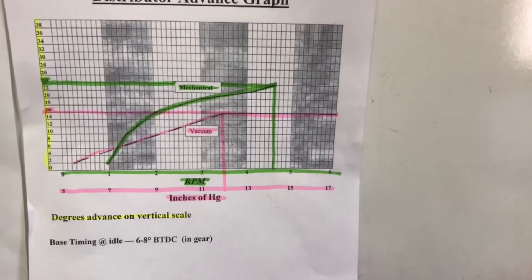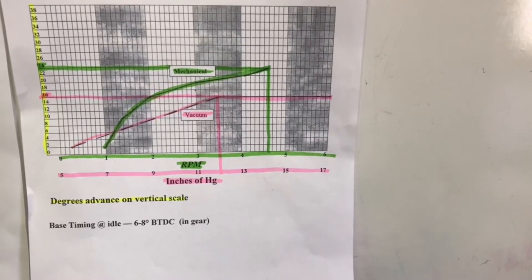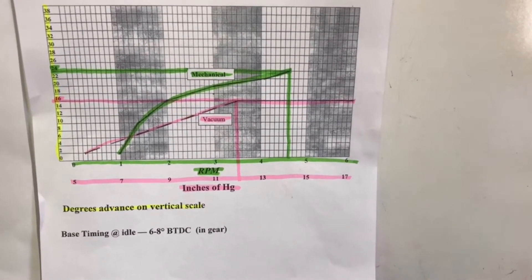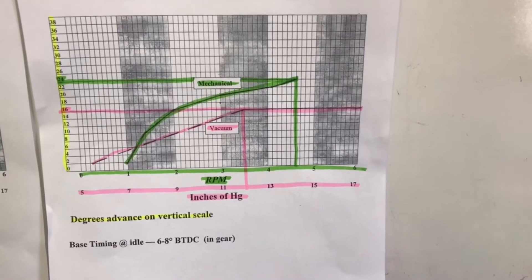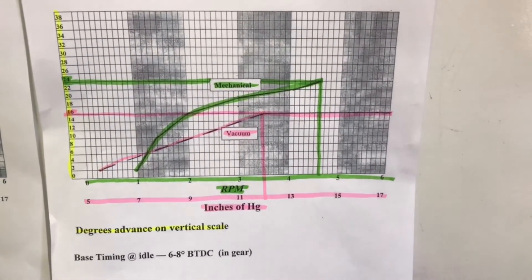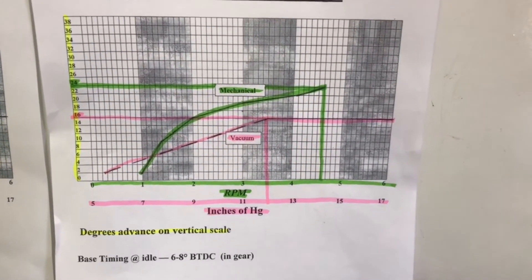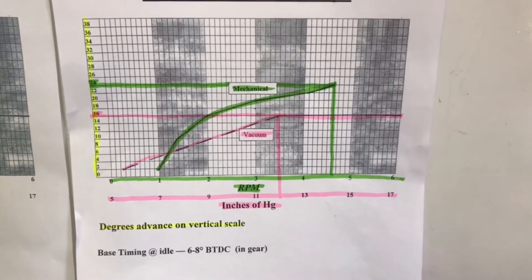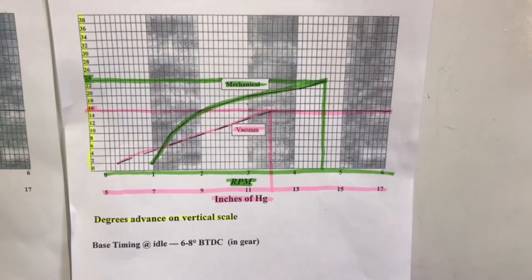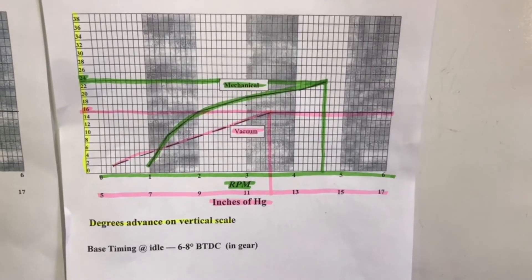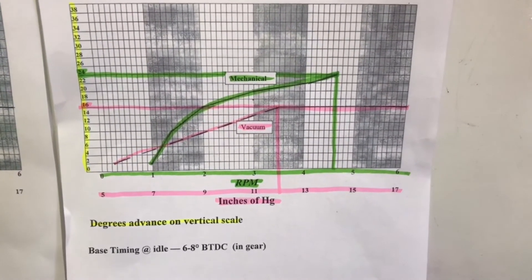The mechanical advance — we'll look at that one first. Basically what it's saying is at a thousand RPM — you can see the bottom scale highlighted in green pertains to the mechanical advance — at a thousand RPM it looks like it is starting to add timing advance. At a thousand RPM the spring and weights will add two degrees of advance to whatever the base timing is. As the RPM increases all the way up to 4,500 RPM, it will advance or add 24 degrees of advance to the base timing.